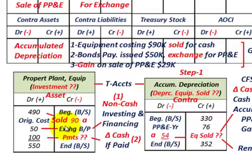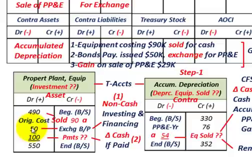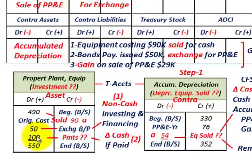Next, we know we exchanged a bonds payable — issued an IOU — for $50,000 worth of equipment. So we increase our equipment account by $50,000 because that is the value received in exchange. Then we need to determine the remaining increase in our equipment account for the year.